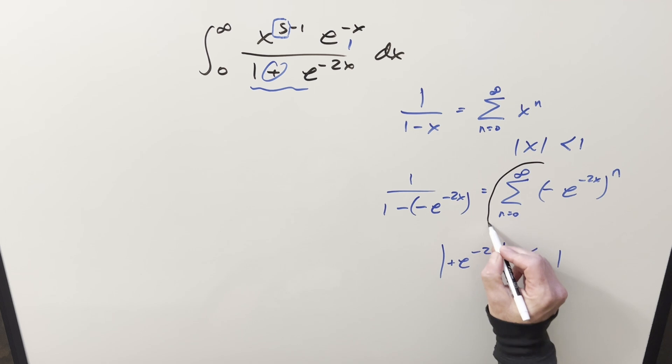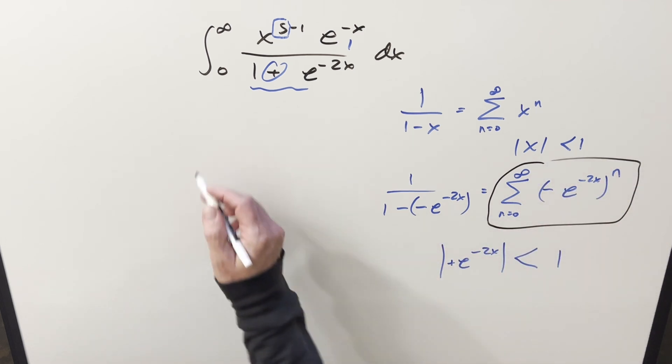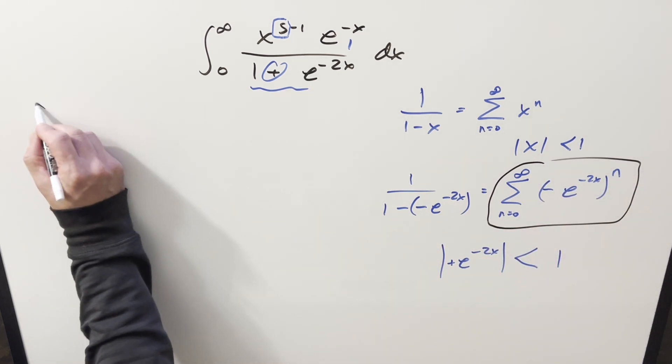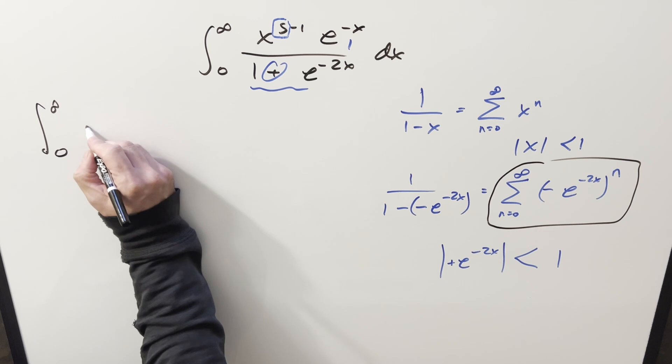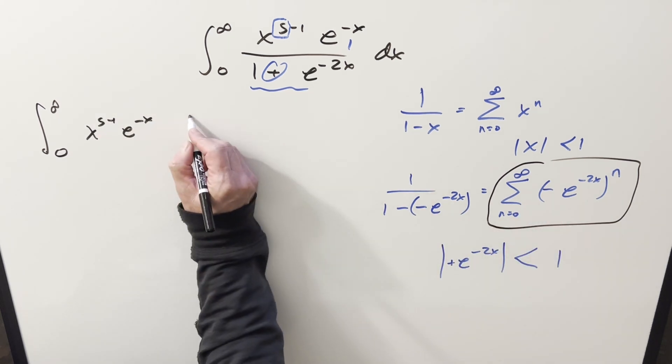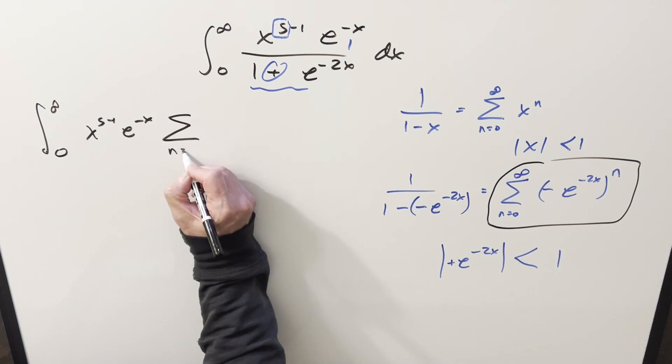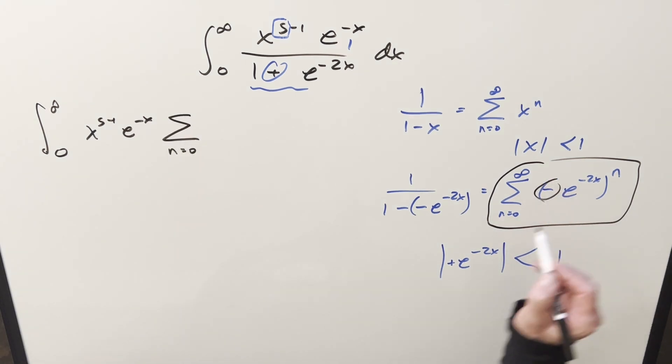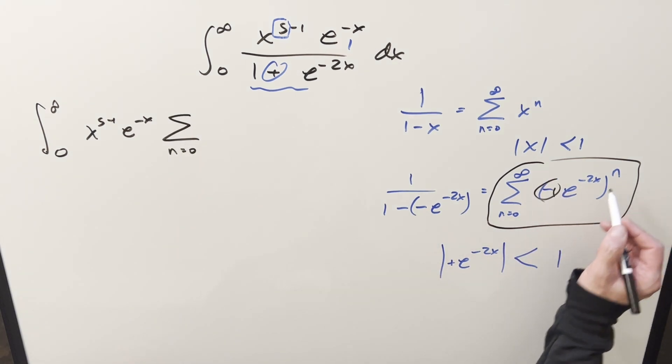Technically at 0 it's going to be at 1, but we don't really care about the endpoints. So what that's going to allow me to do is we can take this right here and plug it back into our integral. We still have the numerator untouched. So first, we'll have this x to the s minus 1, e to the minus x. And then for this, I'm just going to write it a little bit differently because let's separate out this minus 1 and bring it to the n.